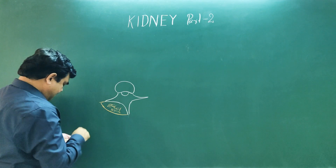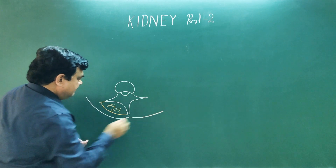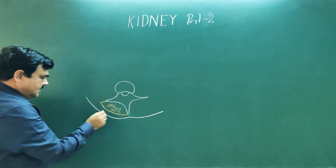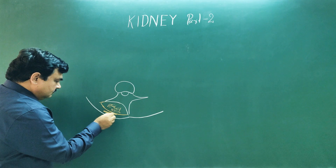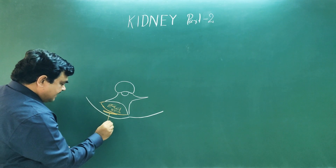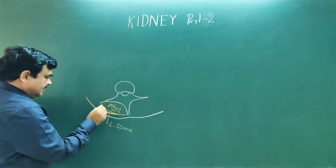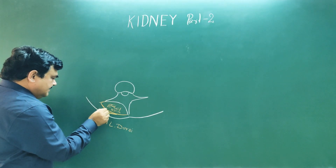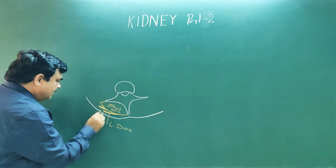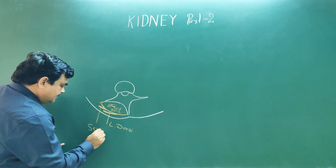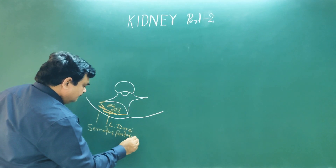Here is position of skin. There is superficial fascia, deep fascia. And here is position of this latissimus dorsi muscle. And another muscle also attaches here. That is serratus posterior inferior. This is serratus posterior inferior.